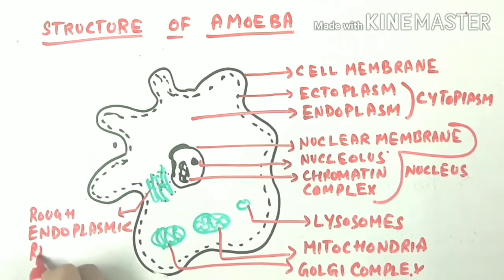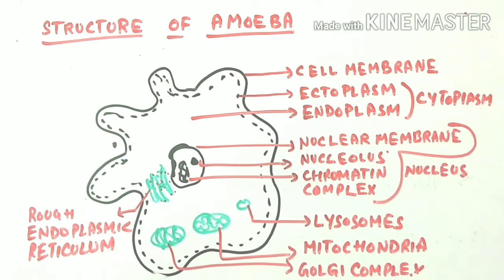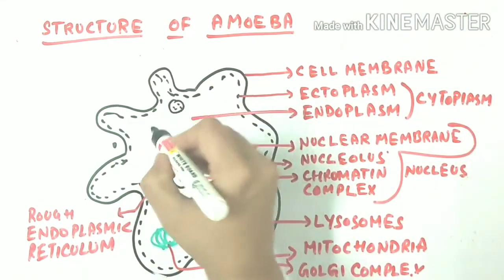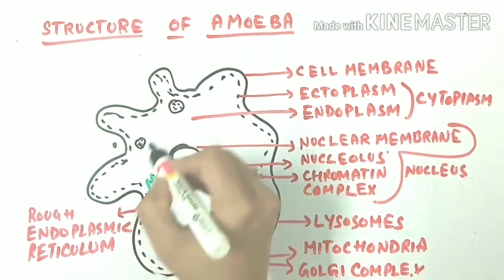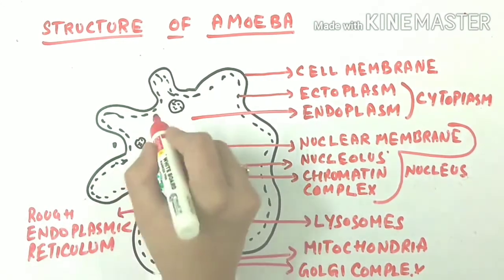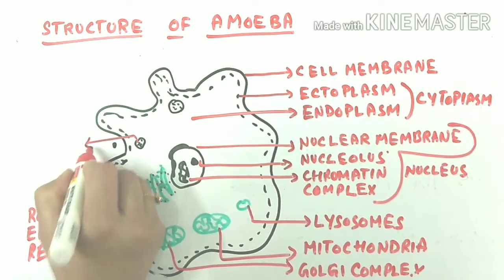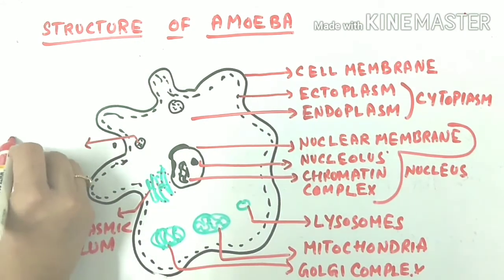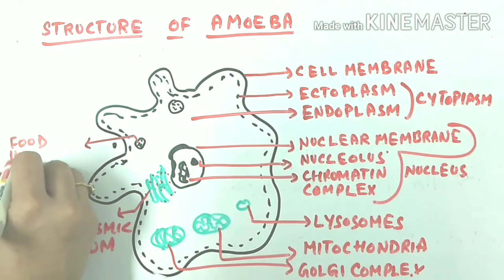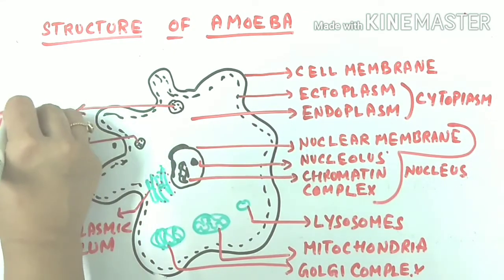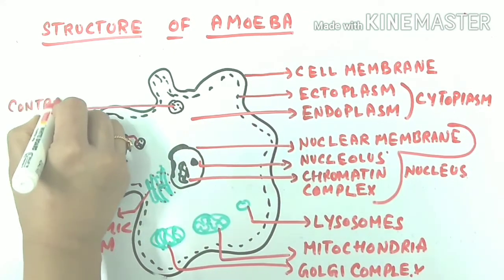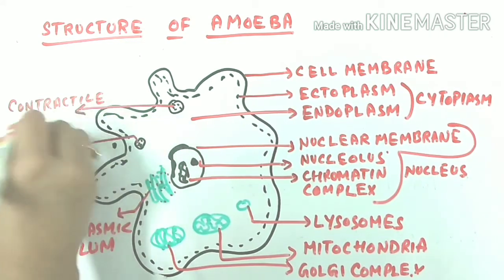Here I am drawing a contractile vacuole and a food vacuole. Osmoregulation is the maintaining of osmotic pressure by controlling the concentration of water and salts. The contractile vacuole helps in osmoregulation — it contracts and expels excess liquid from the cell.